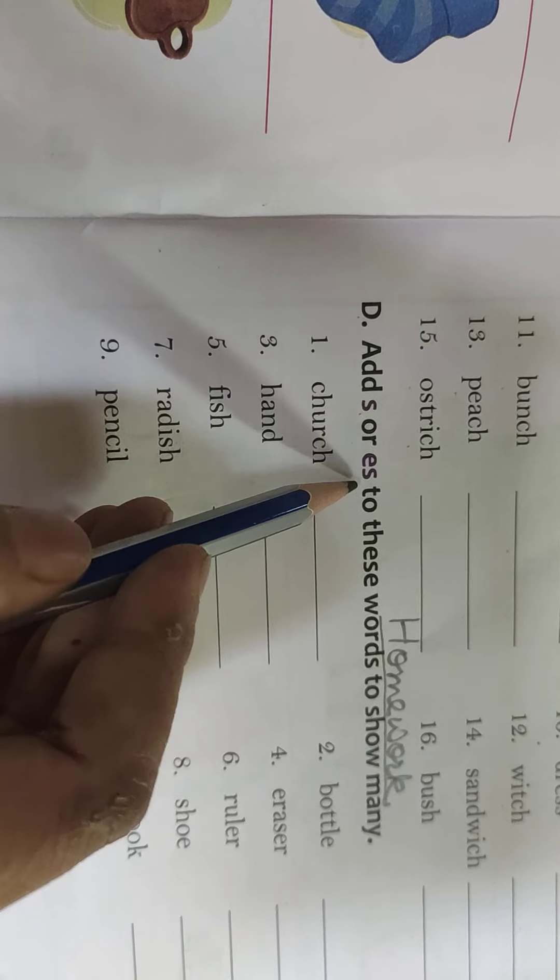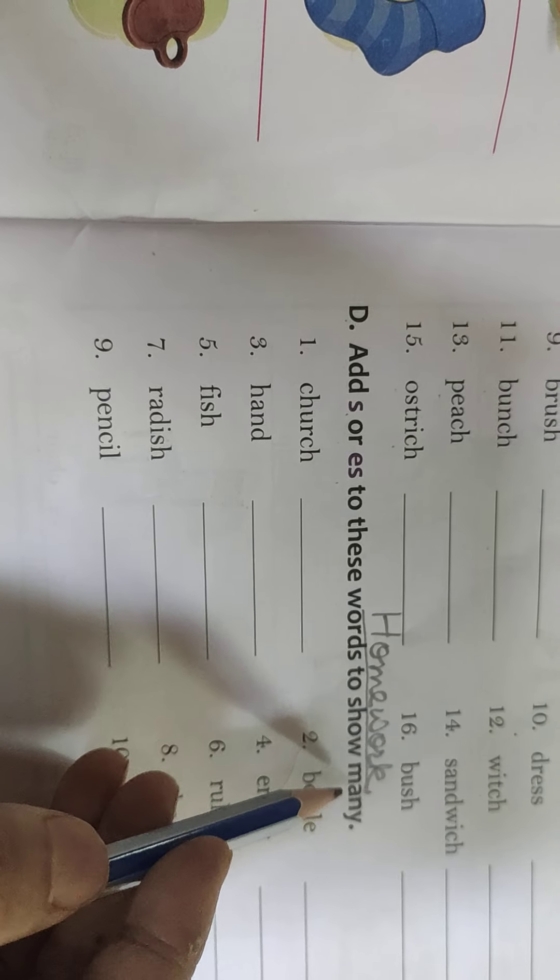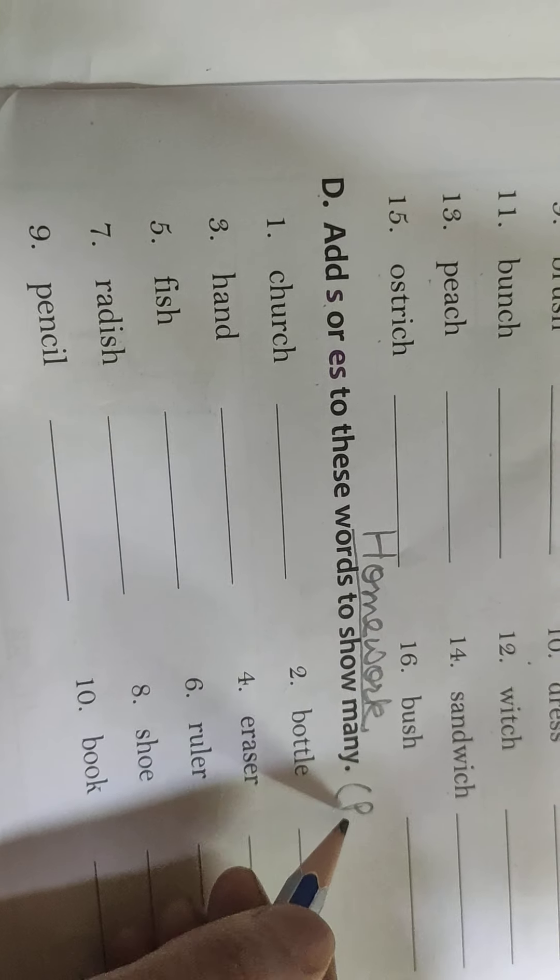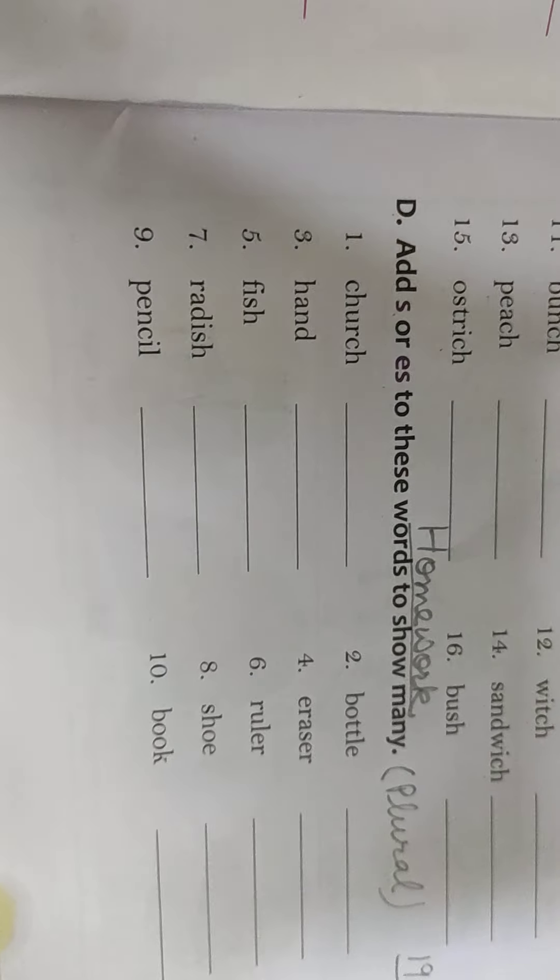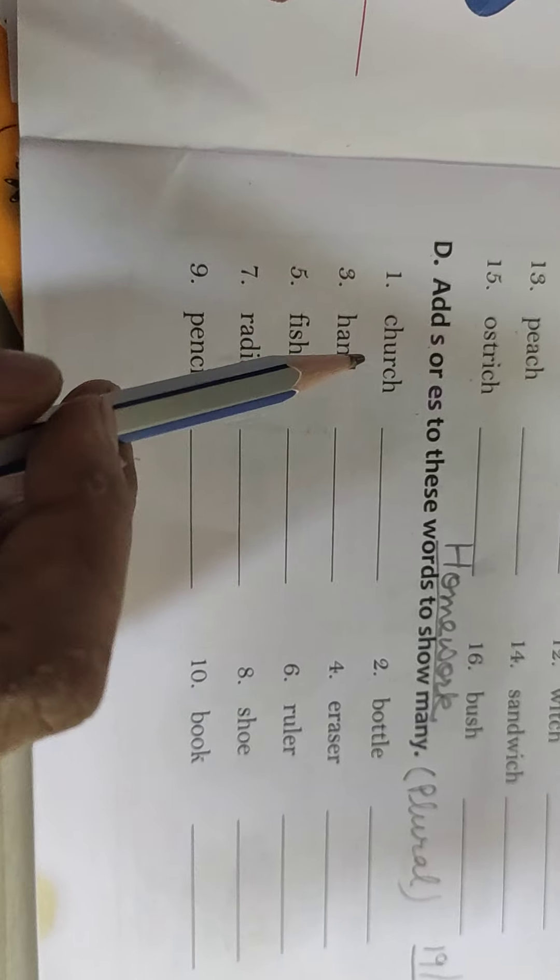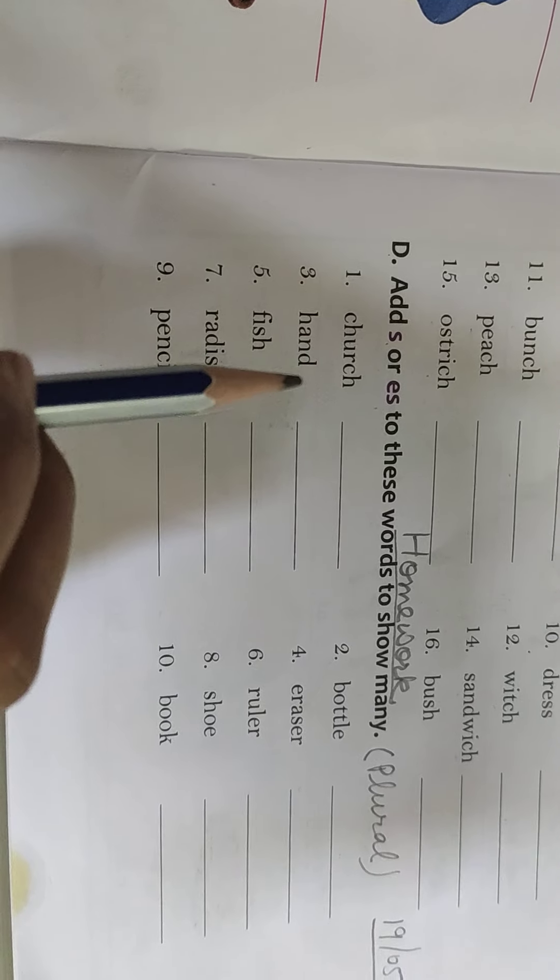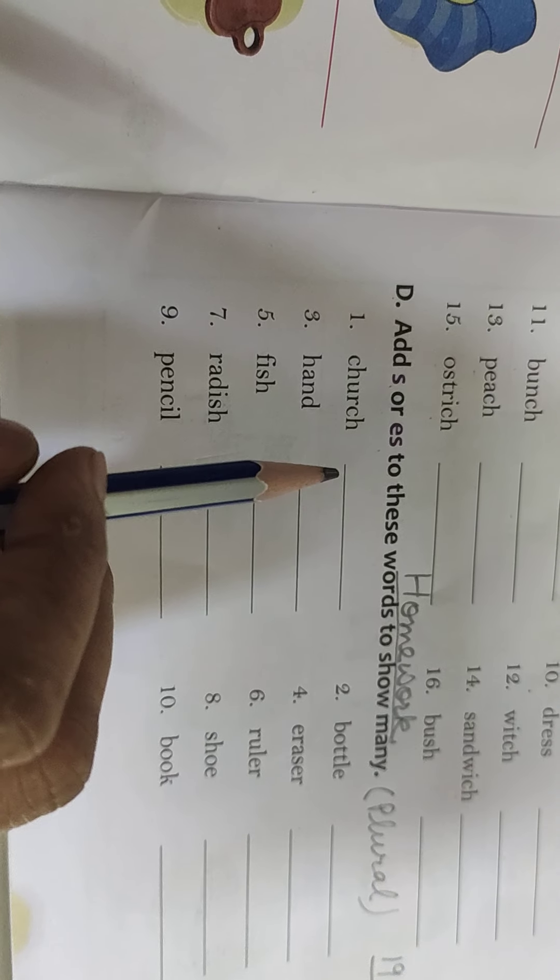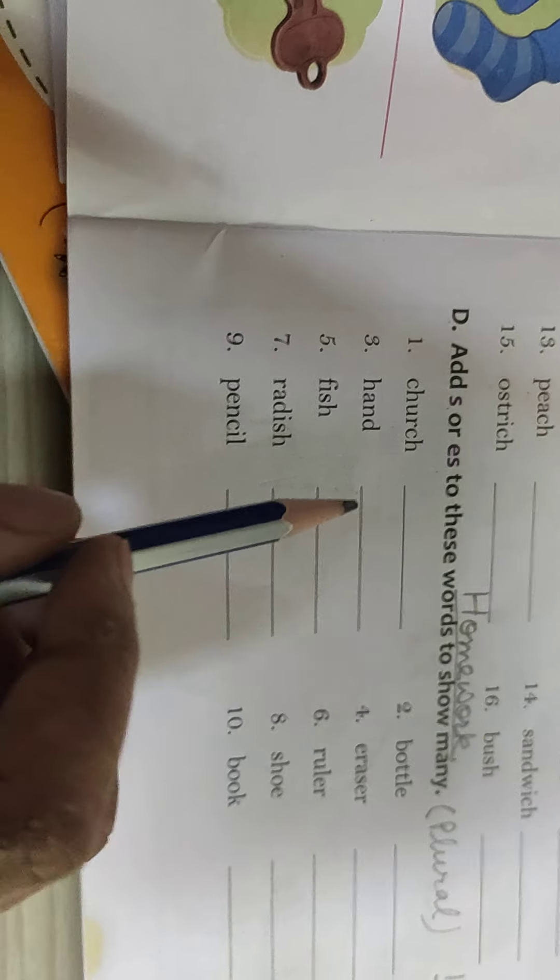Add S or ES to these words to show many. Many means plural. And one means you can say singular. Now you have to remember that just word K last may CH double S S X O SH I ga.